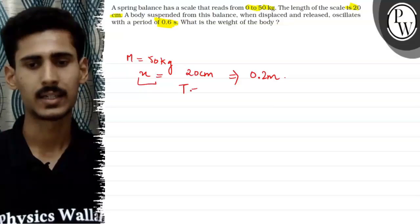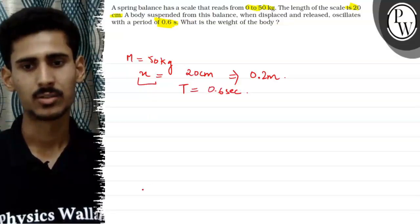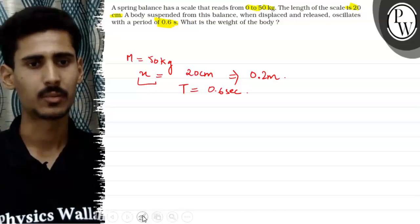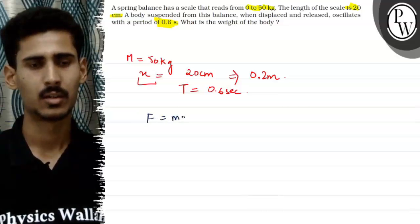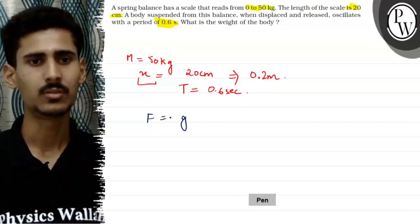And time period given, time period T is given to be 0.6 seconds. So maximum force to exert spring. So the maximum force that will be exerted on the spring is given by MG, capital M into G.